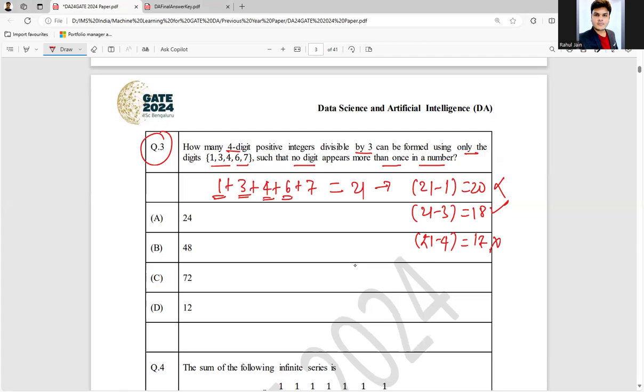Thereafter if I will remove 6, 21 minus 6 that is 15. It is divisible by 3. And then if I will remove 7, 21 minus 7 it is 14, not divisible by 3.